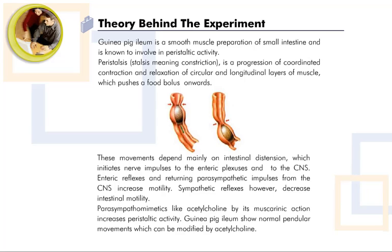Parasympathomimetics like acetylcholine, by their muscarinic action, increase peristaltic activity. Isolated guinea pig ileum shows normal pendular movements which can be modified by acetylcholine.